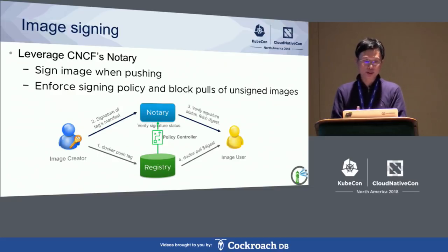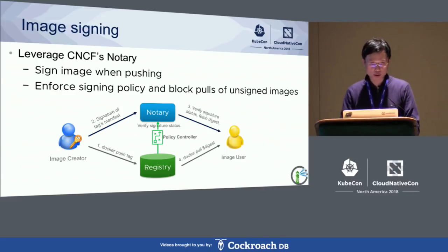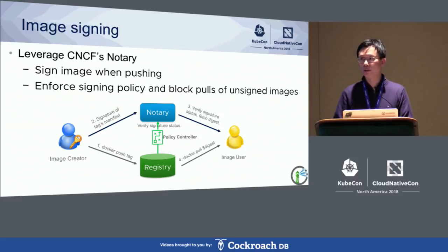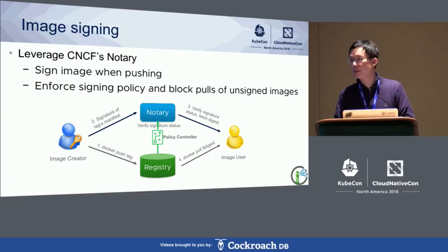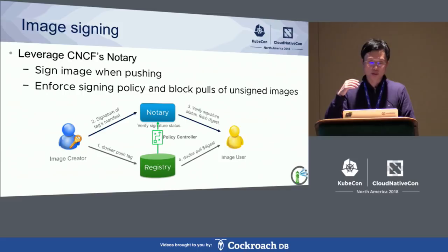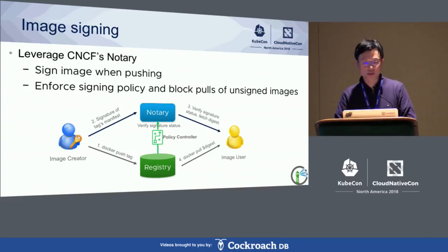The next security feature is image signing. We need to know the provenance of an image — where it came from. We can sign the image when pushing to the registry and then enforce a signing policy when pulling. Any request to pull an unsigned image will be blocked if signing is enforced. This is done using another CNCF project called Notary, which stores the signature for a particular image. When pulling, we check with the signature store in Notary to find out whether it is a known, trustworthy source.